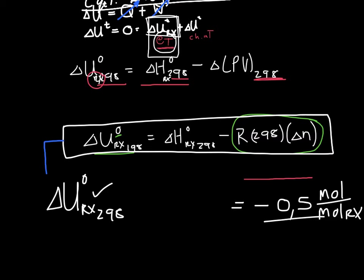Substitution of values in this equation will now allow us to calculate the change in internal energy due to the reaction at 298 in units of joules per mole reaction.